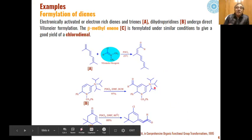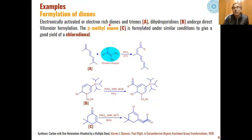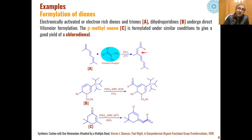There are many examples available for the Vilsmeier reaction. This reaction is also shown by electron-rich dienes and trienes, in addition to aromatic systems. For example, if we have a triene system, the Vilsmeier reagent in the presence of POCl3 at room temperature can react with the triene, adding as an electrophile to the carbon-carbon double bond, and aldehydes are formed as the product.